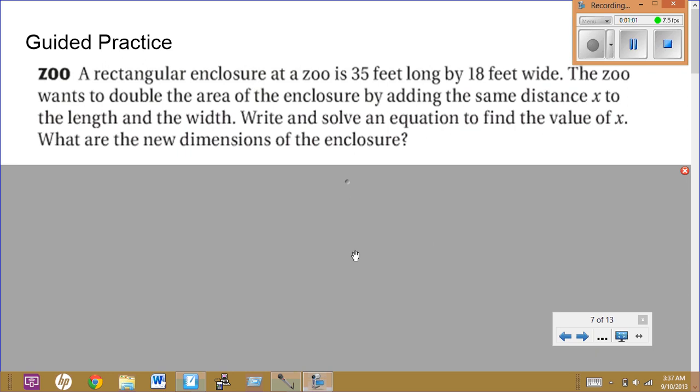Okay, a rectangular enclosure at a zoo is 35 feet long by 18 feet wide. The zoo wants to double the area of the enclosure by adding the same distance x to the length and the width. Write and solve an equation to find the value of x. What are the new dimensions of the enclosure?